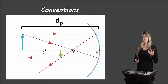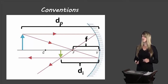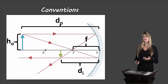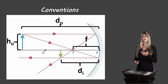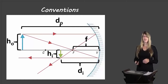The distance between the object and the vertex is DO — D for distance, O for object. The distance between the image and the vertex of the mirror is DI — D for distance, I for image. The distance between the focus and the vertex is F for focal length. The height of the object, which is a new convention for us, is HO — H for height, O for object. And the height of the image is HI — H for height, I for image.